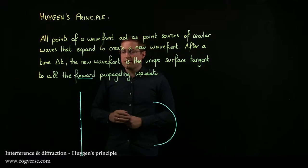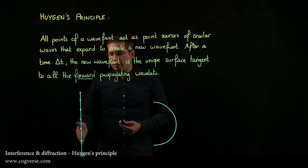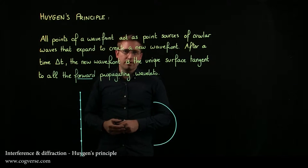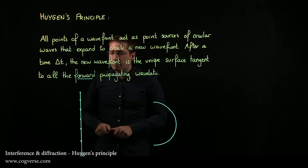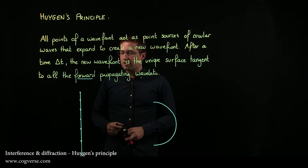So let's see if we can understand this. It says all the points of a wavefront. Here I have a plane wavefront and I only selected a few points because really there's an infinite number of them and I'm not going to draw them all, but let's see if we can understand how this works.